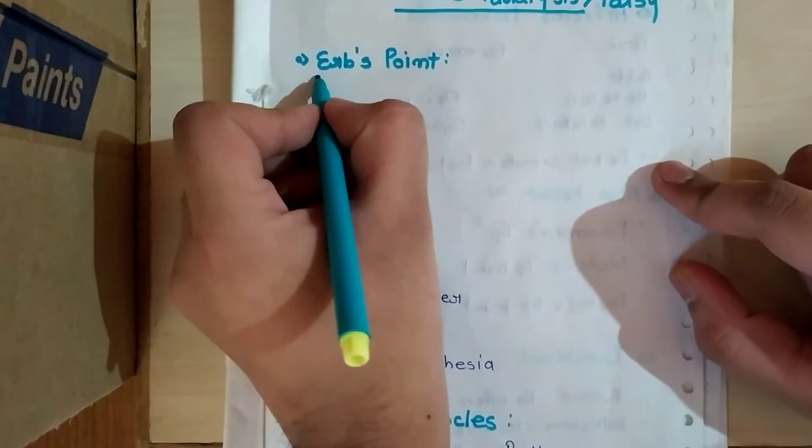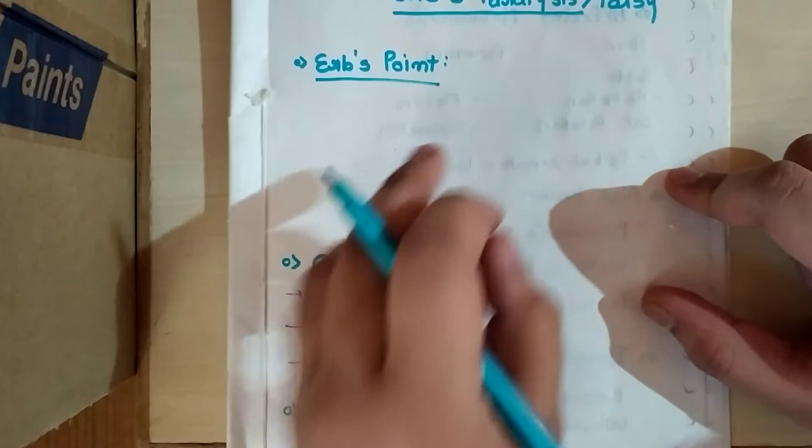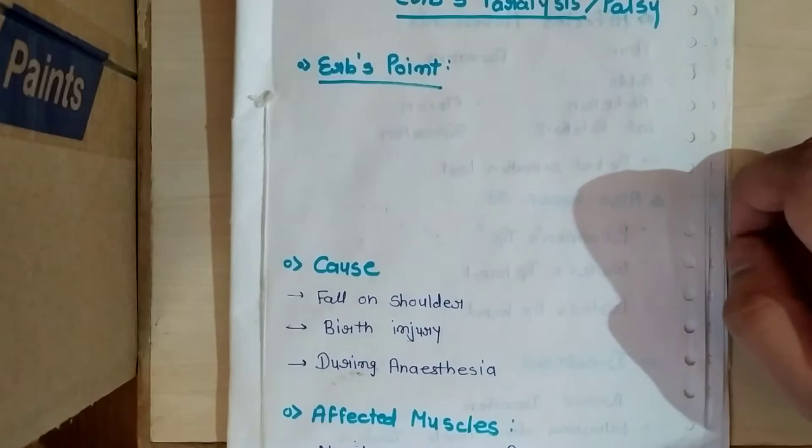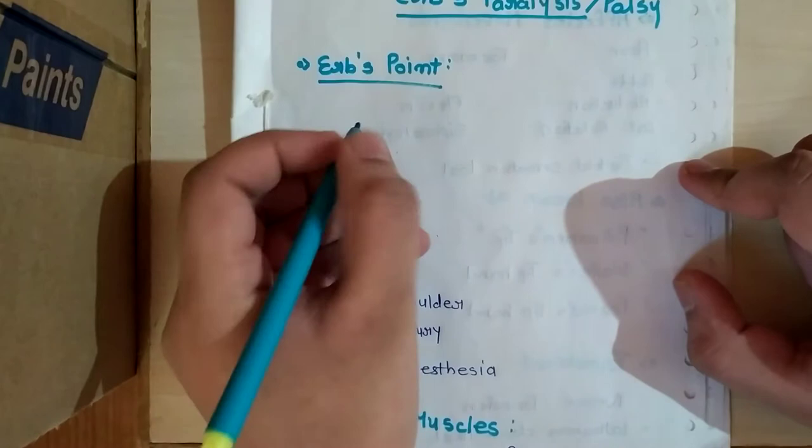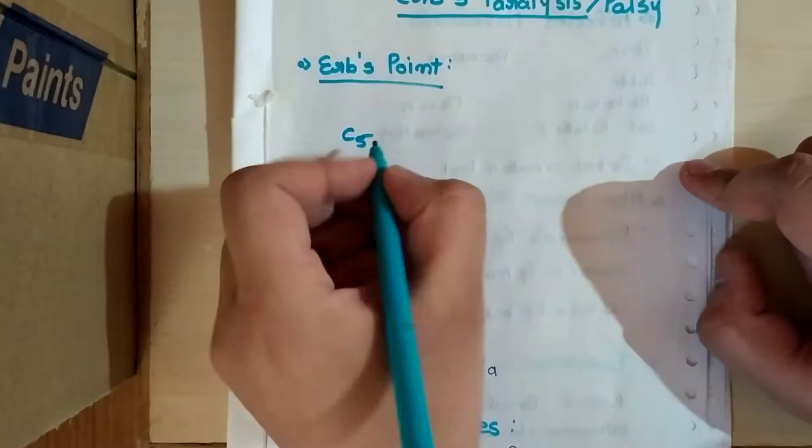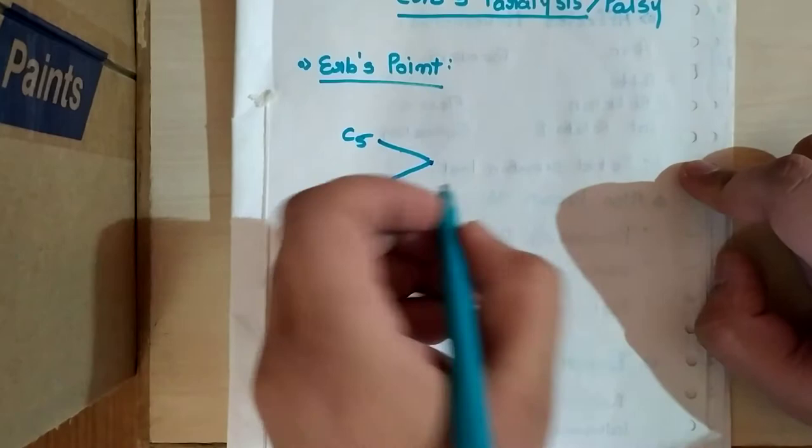We are going to start with what is Erb's point. Erb's Palsy occurs due to injury at Erb's point. First we have to understand what is Erb's point. In the brachial plexus, if you have not seen that video, go to the channel and see that. The first two roots which are C5 and C6 combine and form a trunk known as upper trunk.